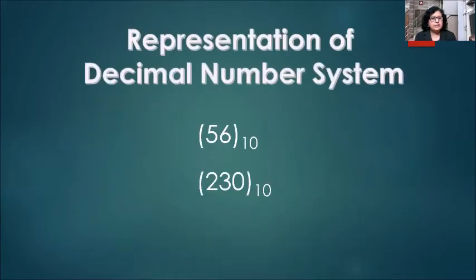Now let us understand the representation of decimal number system. For example, let's take the number 56. For representing a number in decimal number system, we write 10 on the subscript of the numbers in the brackets. This can be seen on the slide. We will read this as 56 to the base 10. Similarly, we will read the second example as 230 to the base 10.